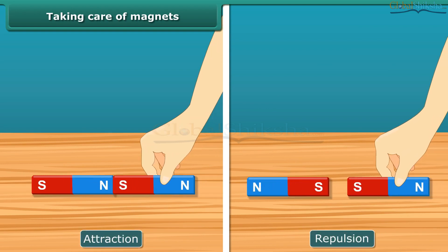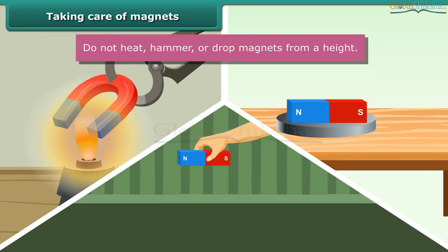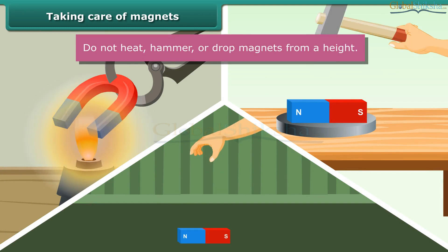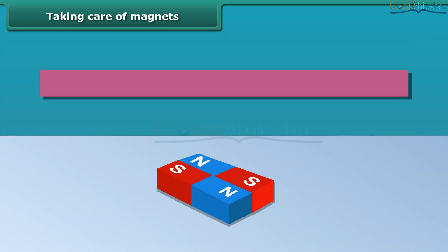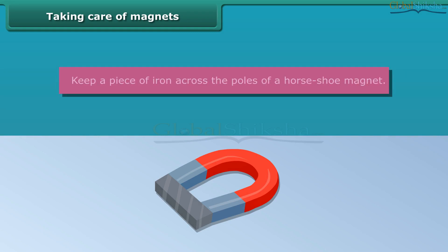To keep magnets safe and in working condition, follow these guidelines: do not heat, hammer, or drop magnets from a height, as they will lose their property. Keep bar magnets in pairs with their opposite poles on the same side, and use wood to separate them.